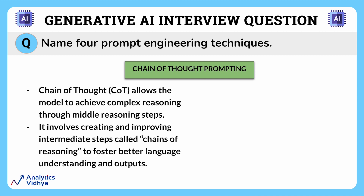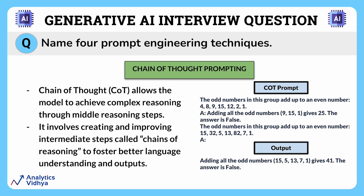The next is chain of thought prompting, or COT prompting. This allows the model to achieve complex reasoning through intermediate reasoning steps. At its core, chain of thought prompting is about guiding the LLM to think step by step rather than just giving a direct output. This is achieved by providing the model with a few-shot examples that outline the reasoning process, and the model is then expected to follow a similar chain of thought while answering the prompt.